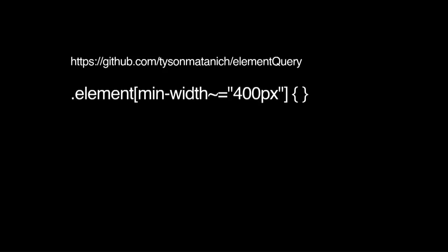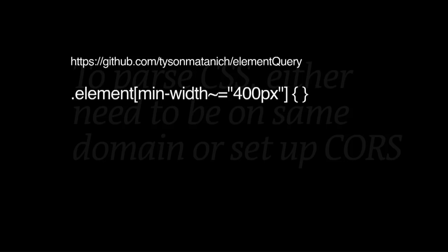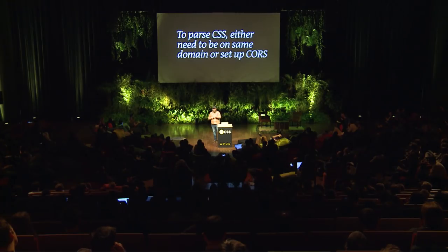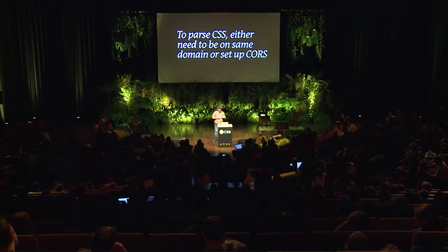We can declare this stuff in our CSS. But one of the problems we ran into at Shopify was that to parse the CSS, that stylesheet needs to be on the same domain as our JavaScript, or we needed to set up a cross-origin header to say these requests are okay. When we looked at our implementation, how quickly we needed to roll this out, and talked to our content delivery networks, we realized setting up all the CORS headers was going to be too much. We're not going to be able to do this in CSS.